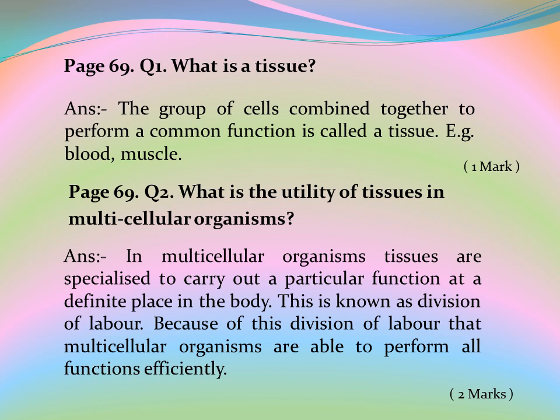Page 69, Question 2: What is the utility of tissues in multicellular organisms? Answer: In multicellular organisms, tissues are specialized to carry out a particular function at a definite place in the body. This is known as division of labor. Because of this division of labor, multicellular organisms are able to perform all functions efficiently.